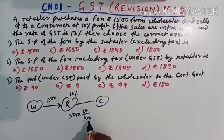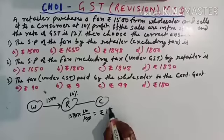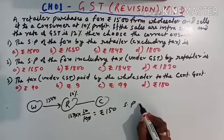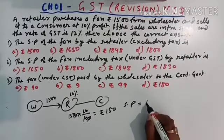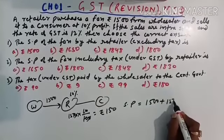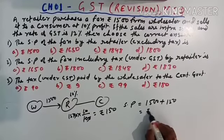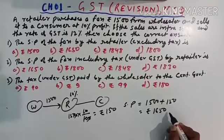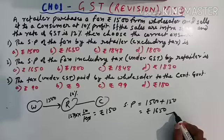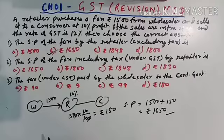So 10 by 100, cancel it. So he has increased Rs. 150. So total selling price excluding tax would be Rs. 1500, then plus Rs. 150, it would be how much? Rs. 1650, this is the price of fan excluding tax. So your answer would be B number, understood.